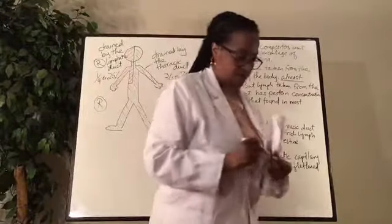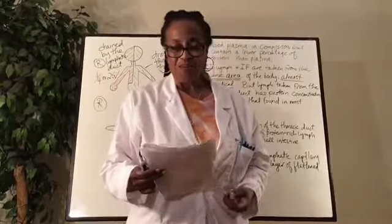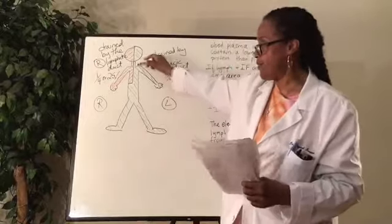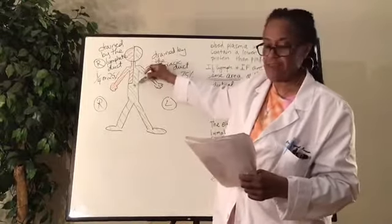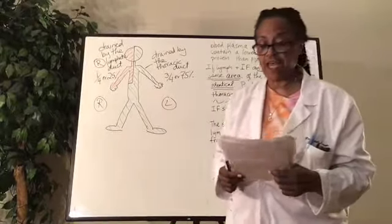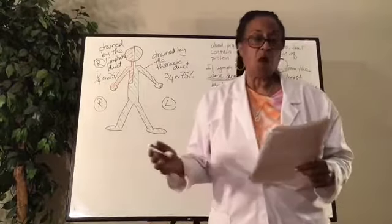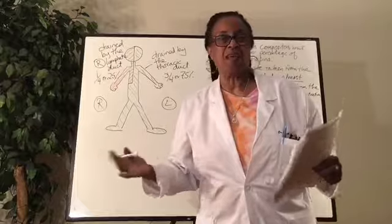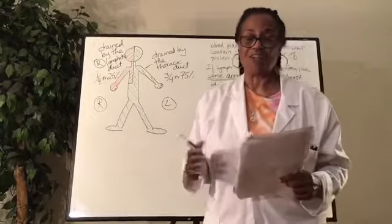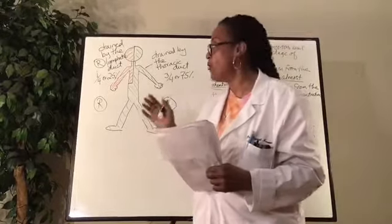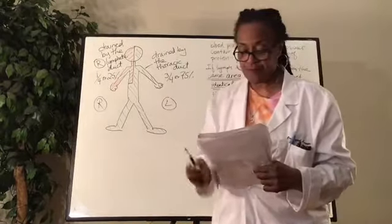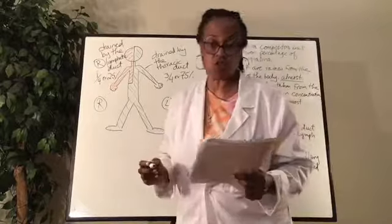Most of the lymph of the body returns to the bloodstream by way of the thoracic duct, which hangs here in the mediastinum. This vessel is considerably larger than the other lymph channels, but smaller than large veins. It does resemble veins in structure. Let's talk about the structure of lymphatic vessels.